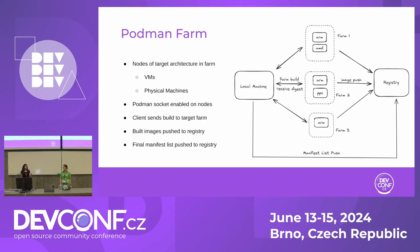The idea here is: you were manually managing multiple builds for different architectures on different machines. Is there a way we can automate this process and do everything with one single command? Podman has a unique socket that a client can connect to over SSH. The idea was to have machines of different architectures available that are running this Podman socket, and from your local machine you can connect to this socket and send your builds over there.